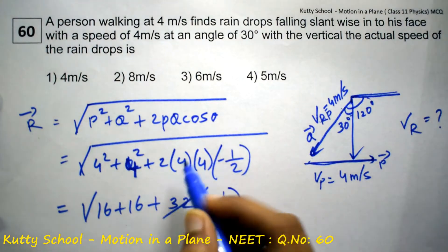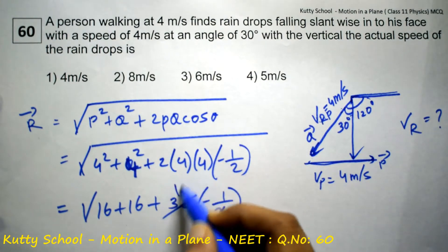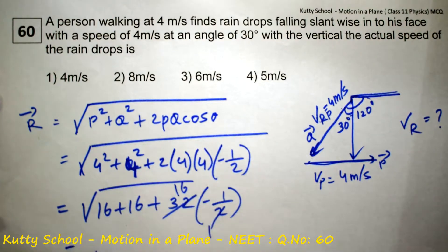This equals root of 16 plus 16 minus 16. The 16 and minus 16 cancel, and it equals root 16, which is equal to 4 meters per second.